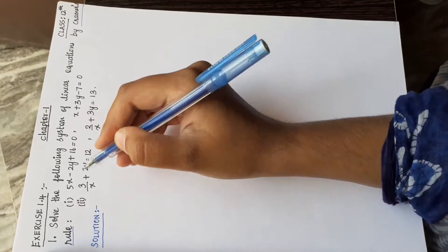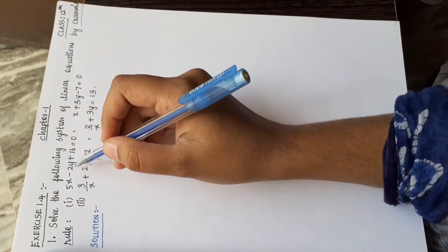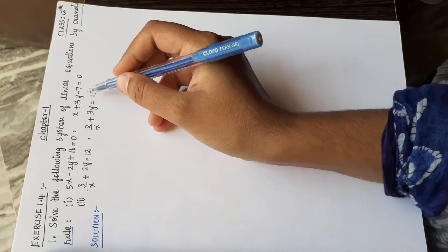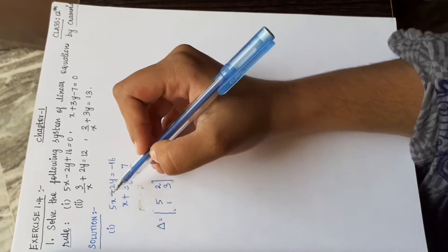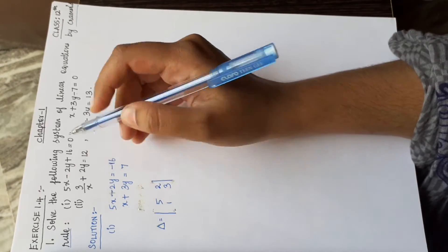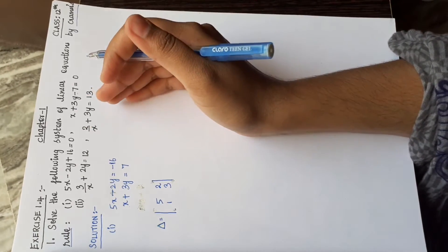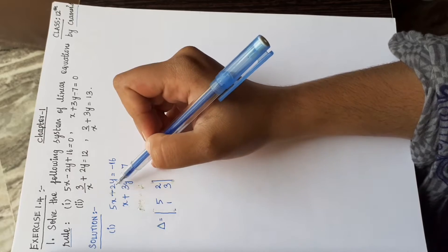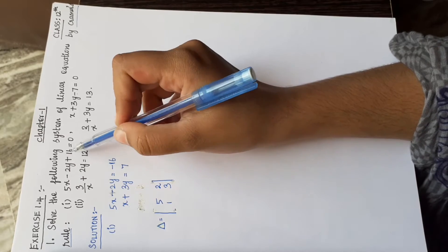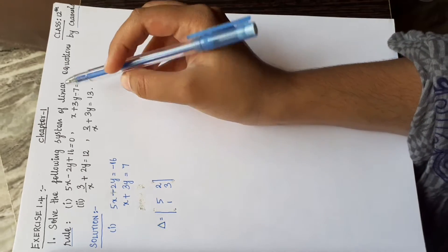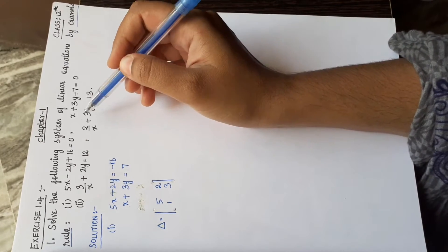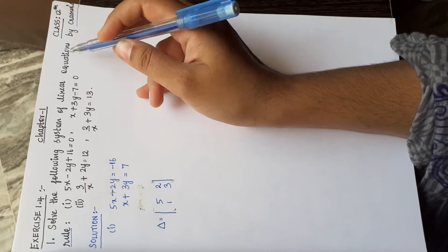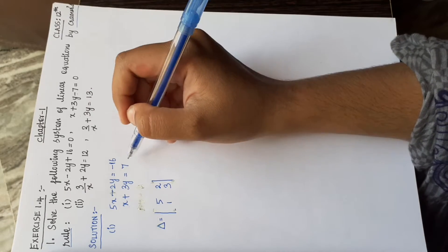First subdivision: 5x plus 2y plus 16 equal to 0 and x plus 3y minus 7 equal to 0. Moving the constant term to the right-hand side: 5x minus 2y is equal to 16, and x plus 3y is equal to minus 7.